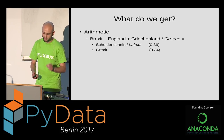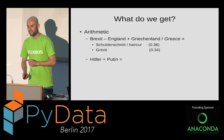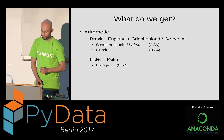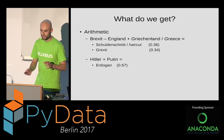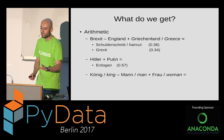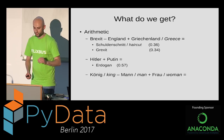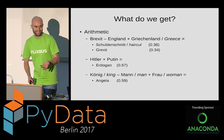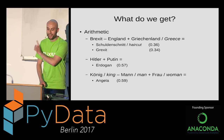Let's get nasty again. Hitler plus Putin equals — it's Erdoğan. And one final one: the classic example — king minus man plus woman. In a decent dataset that's queen, no questions asked. But we're talking about user comments. And it's Angela. So she's the queen of Germany. I'm not making this up — this actually came out of the network.